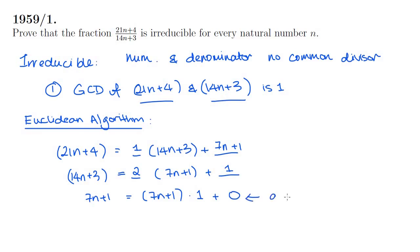So once we find 0, once we have 0, we know that the algorithm has come to an end, and once the algorithm has come to an end, the previous, the second last remainder, which is 1, that is the greatest common divisor. So by using the Euclidean algorithm, we have shown that the GCD of 21n plus 4 and 14n plus 3 is in fact 1, and that is method 1.